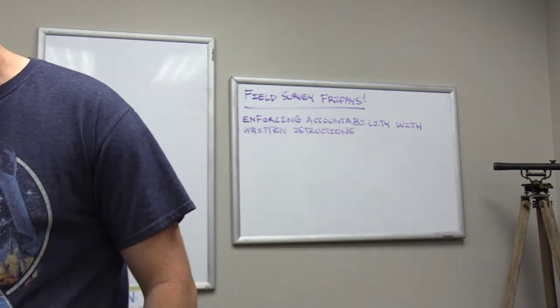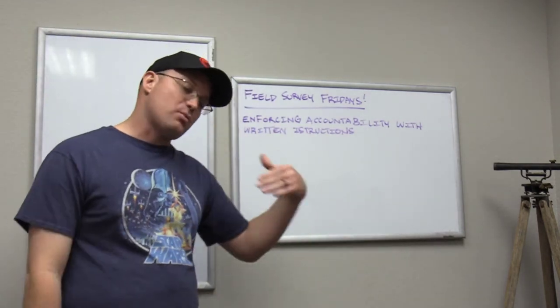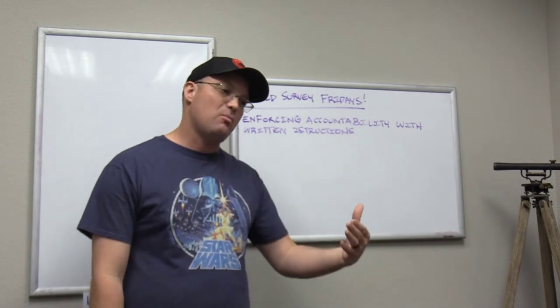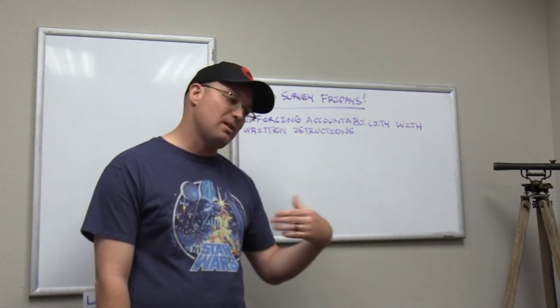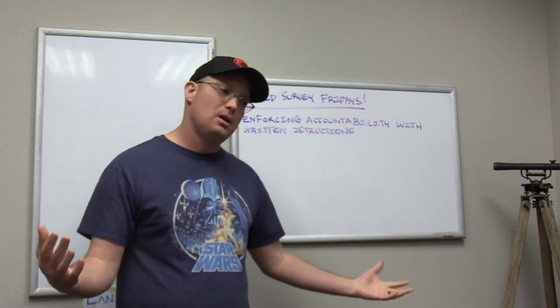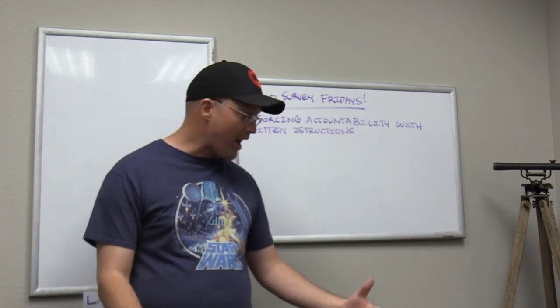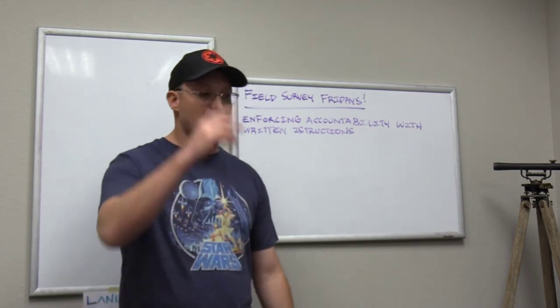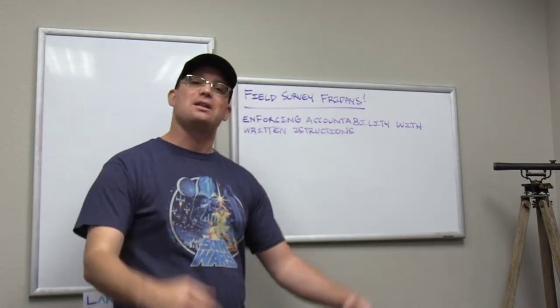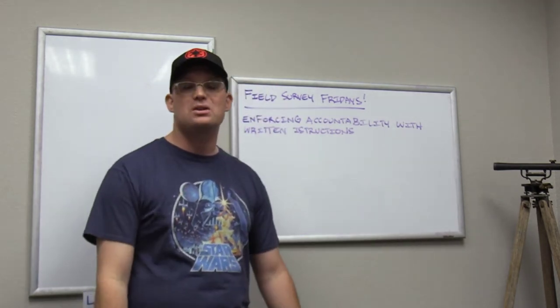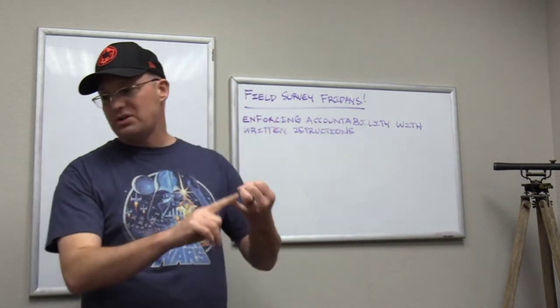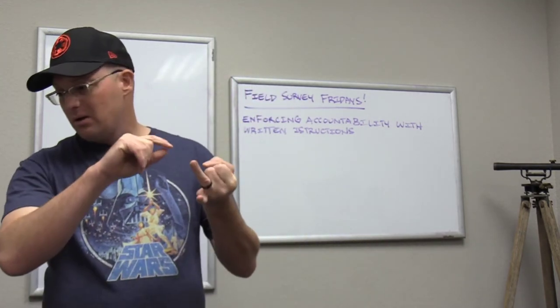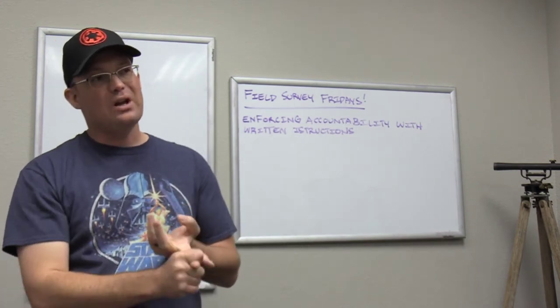The office has a responsibility to provide the field crew with a good written handoff, a good set of clear written instructions. I always tell my office surveyors if you hand the field crew a napkin sketch and they bring you back a pile of dog poop do not complain. Now there are good party chiefs, they're rare, where you give them an address they'll bring you back a good boundary topo with everything you need. That doesn't happen very often and I don't think it's fair to expect that of a party chief especially a newer party chief that doesn't have the experience. You need to tell him what to do, how to do it, why he's doing it, and when it needs to get done.